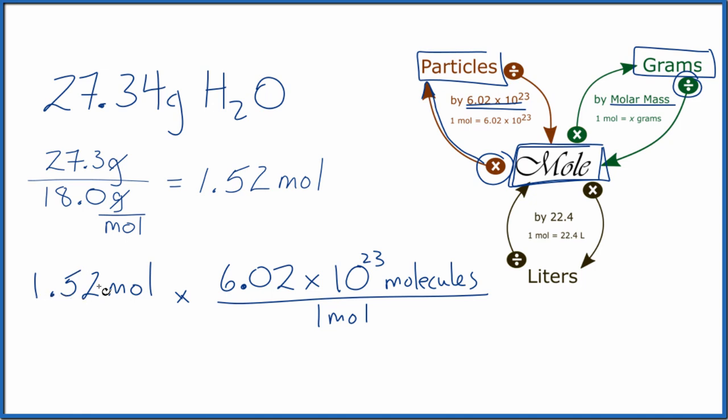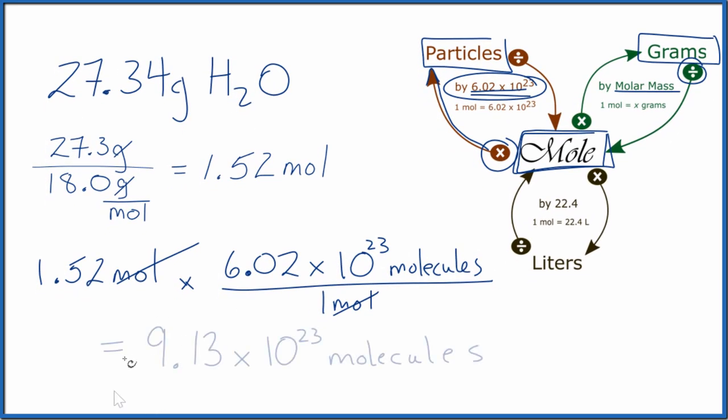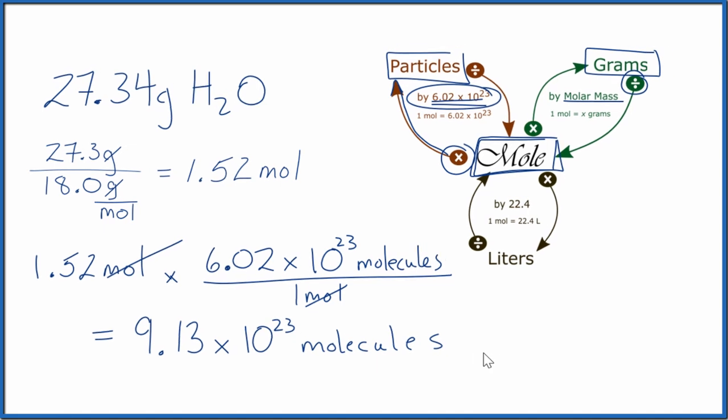So we have our 1.52 moles. That's what we found earlier when we changed from grams to moles. Now we're multiplying by Avogadro's number here. So when we multiply, we have moles on top and the bottom. They're going to cancel out. That's going to leave us with molecules. That's what we want. We multiply and get 9.13 times 10 to the 23rd molecules. So in 27.34 grams we have 9.13 times 10 to the 23rd molecules.